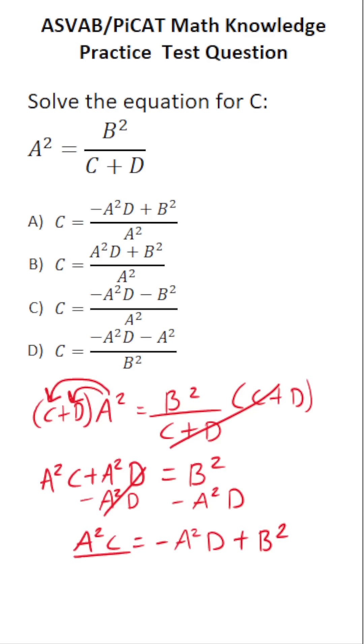And finally, we can get C by itself by dividing everything by A squared. In doing so, this crosses out. This leaves you with C equals negative A squared times D plus B squared over A squared.